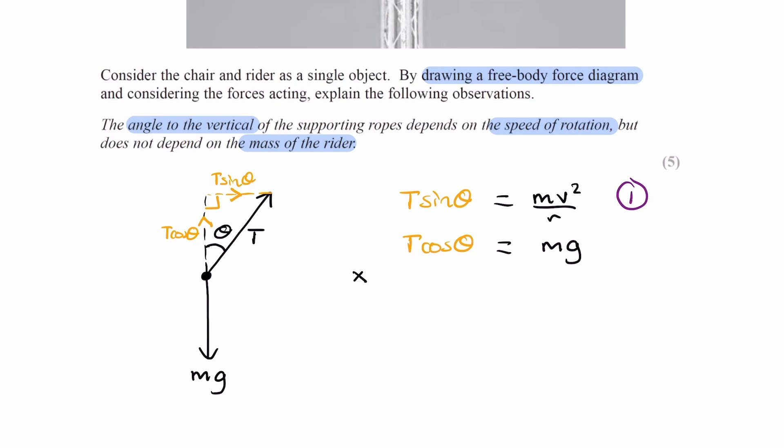If the resultant force is towards the center of the circle, that means the resultant force vertically should be 0. And if that's the case, the vertical component of tension will equal to weight.